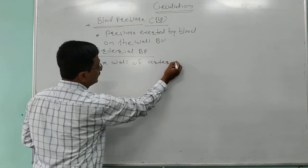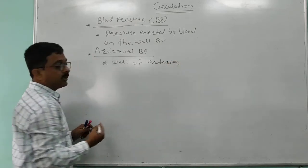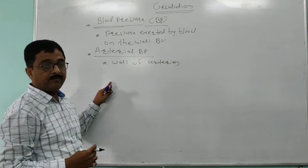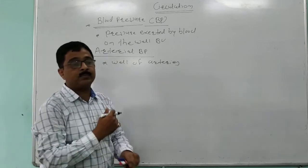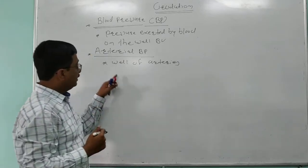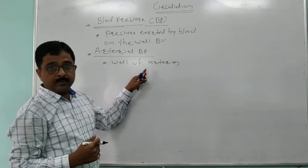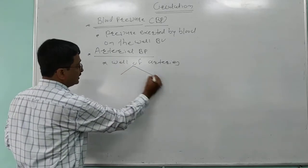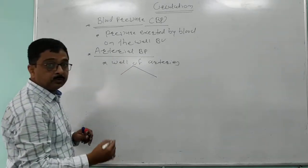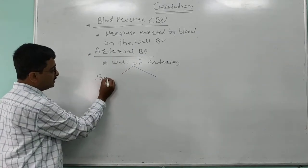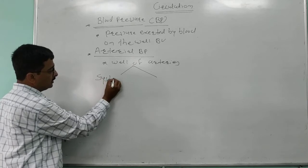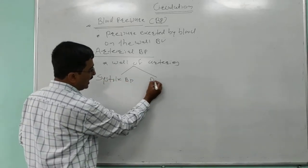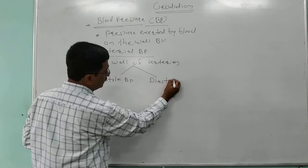This is the arterial blood pressure in human beings, which is generally measured from the arteries. This arterial blood pressure in man is of two types: systolic blood pressure and diastolic blood pressure.